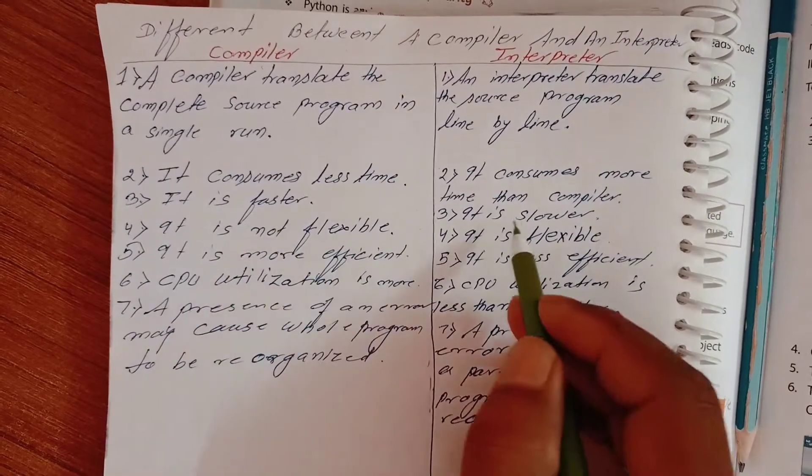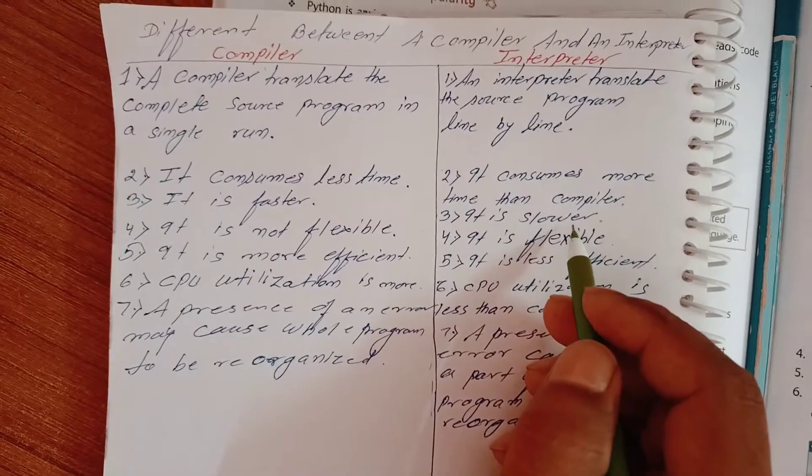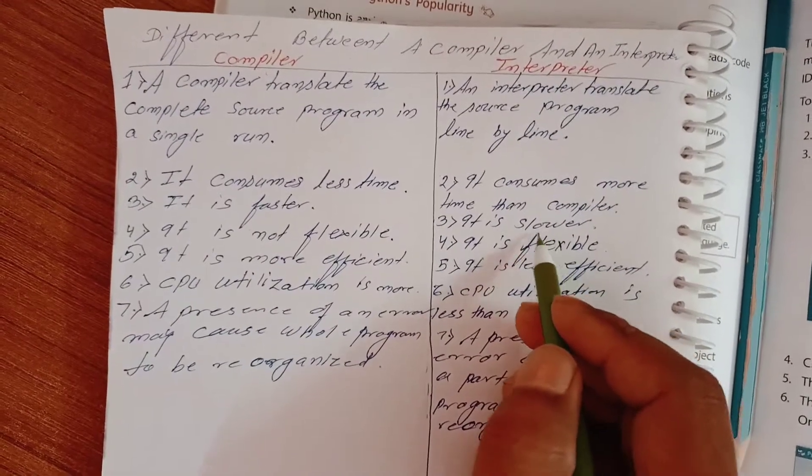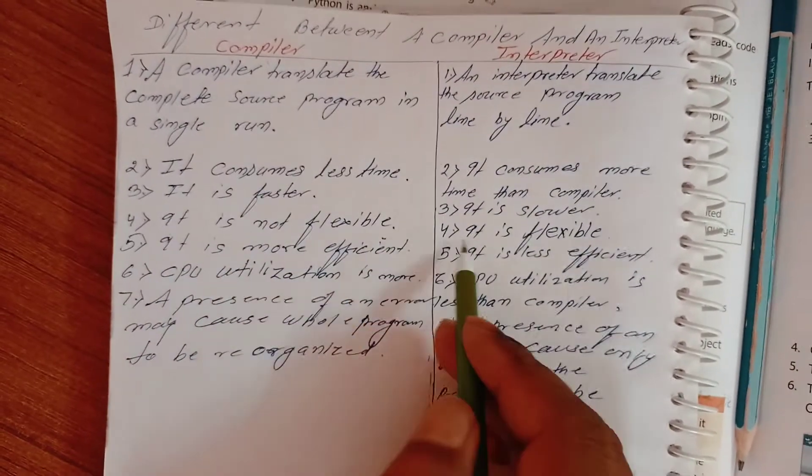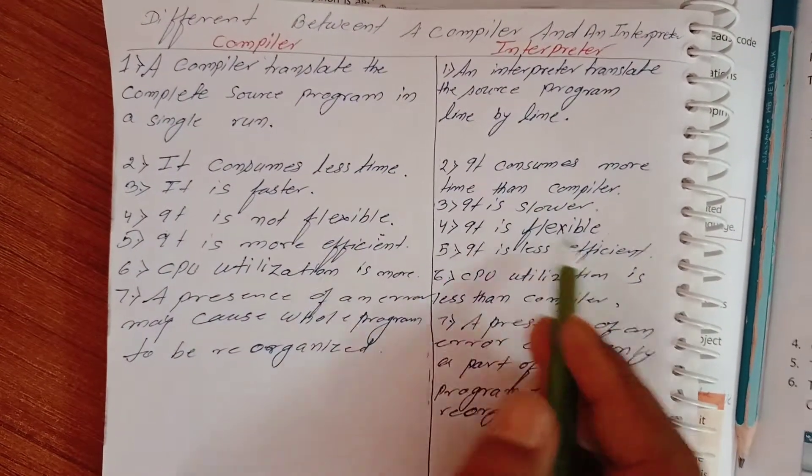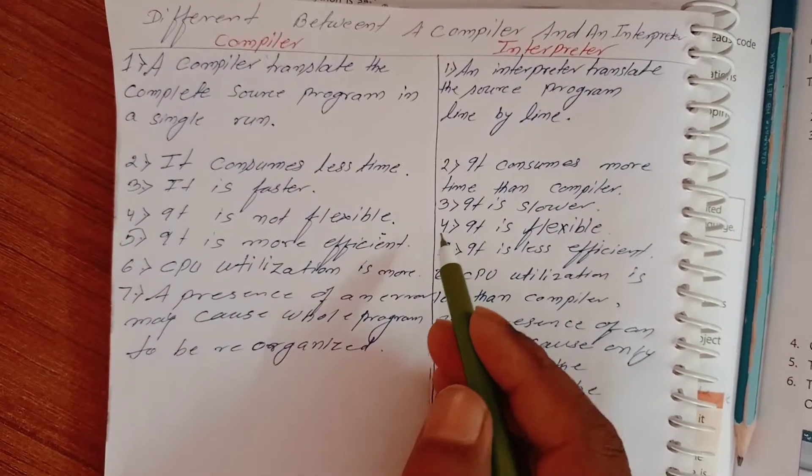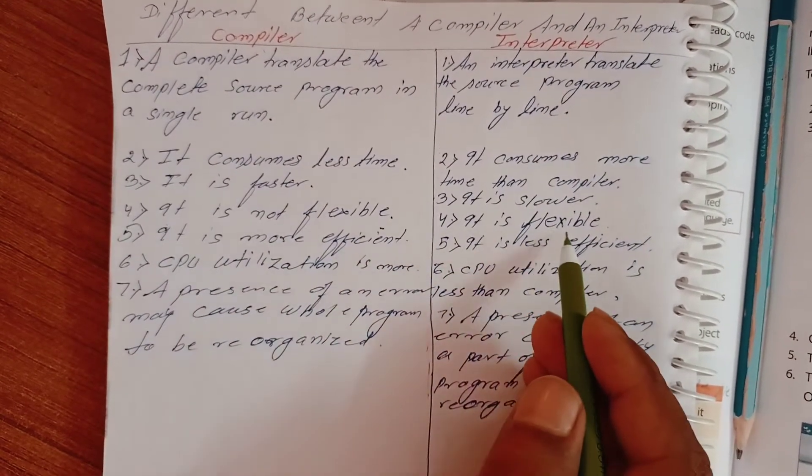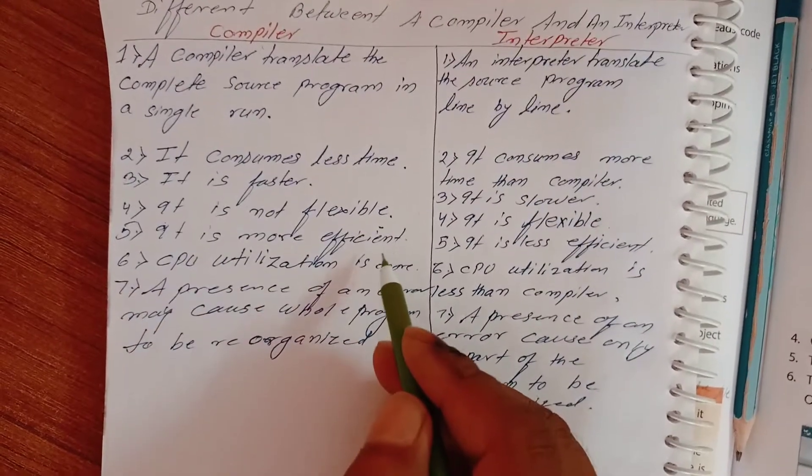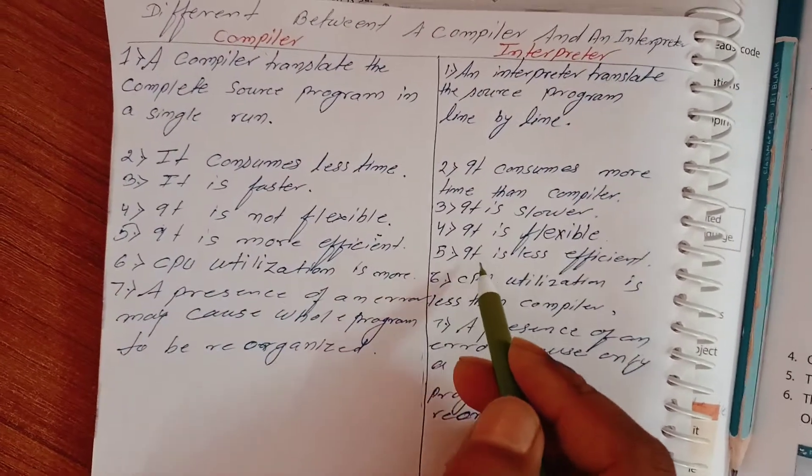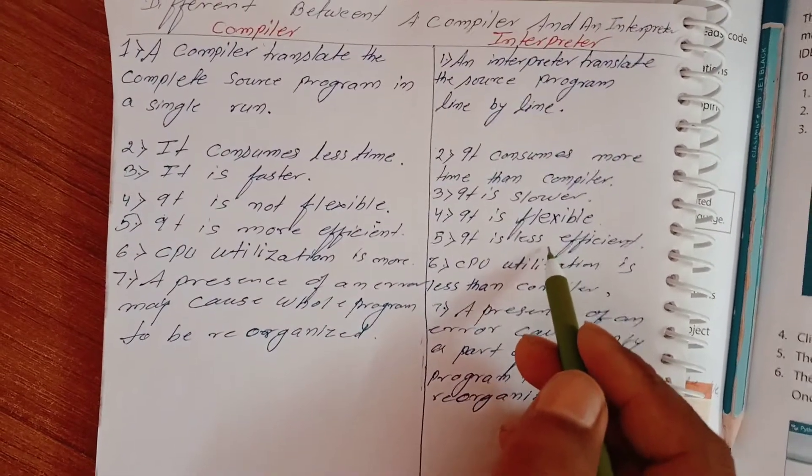Interpreter is slower because it takes more time. Compiler is not flexible and interpreter is flexible. Compiler is more efficient but interpreter is less efficient.